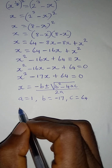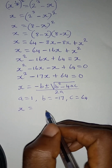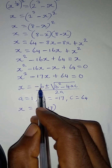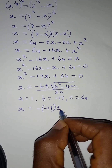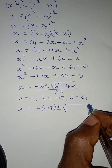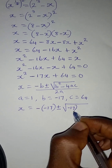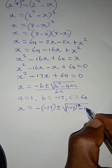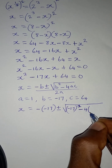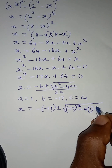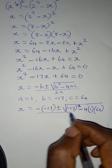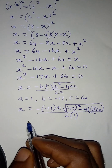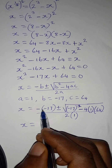Now we substitute into the formula: x equals negative of negative 17, plus or minus the square root of negative 17 squared minus 4 times 1 times 64, all over 2 times 1.